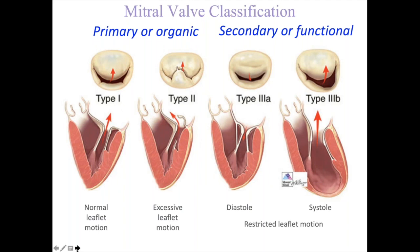Mitral regurgitation can occur in two different classifications. One is primary or organic — meaning there is an intrinsic problem with the mitral valve, such as mitral valve prolapse that progressed or leaflets not constructed properly at birth. The secondary or functional type occurs in patients who have often had a previous heart attack or heart failure, where stretching of the mitral annulus causes malcoaptation of the leaflets and regurgitation of blood into the left atrium. This is what we'll talk about a lot today in the subject of the COAPT trial.